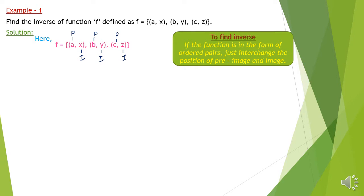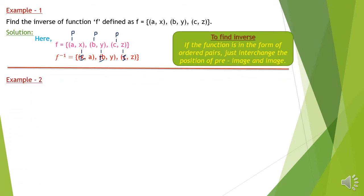We have to change positions: x must come in the position of pre-image, y must come in the position of pre-image, and z must come in the position of pre-image. And a, b, and c must go to the position of image. Just interchange the positions of image and pre-image, and we get (x,a), (y,b), (z,c) — that is our inverse. I hope you understood. You can pause the video and write it down, then let's move to example two on the same slide.